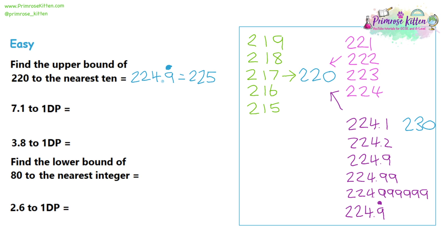Moving on to question two: 7.1 has been rounded to one decimal place. What is the largest number — the upper bound — that would round down to 7.1? We follow a similar process. In the previous question it was a number ending in a 5, so we apply the same thing here and get 7.15. Now that number itself would actually round up to 7.2, but it's practically identical to 7.149 recurring. So we might as well write the simple version. Either answer is correct.